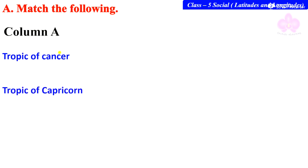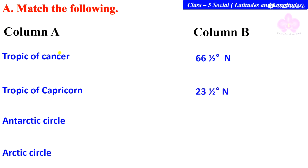Tropic of Capricorn, Antarctic Circle, and Arctic Circle. Column B: 66½° N (N stands for north, S stands for south), 23½° N, 23½° S, and 66½° S. Now think about your answer.